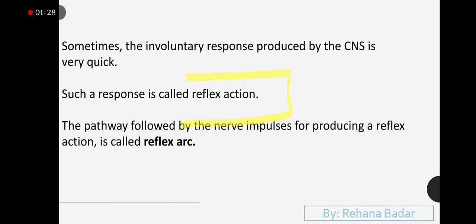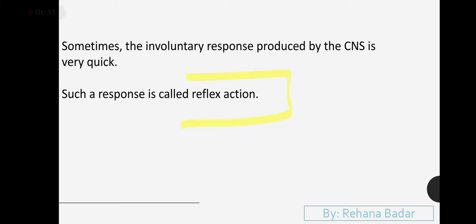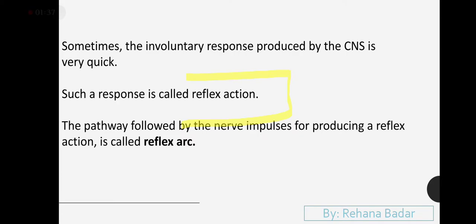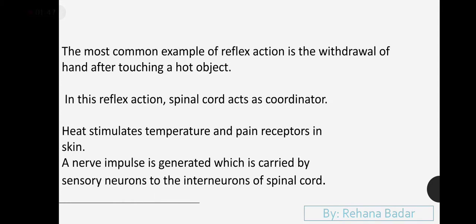The pathway followed by nerve impulses for producing reflex action is called reflex arc. That pathway which follows nerve impulses so that they can produce reflex action, we call reflex arc. Reflex arc is a pathway which is followed by reflex action.